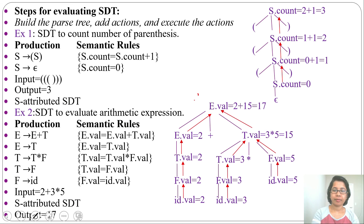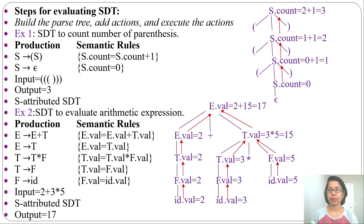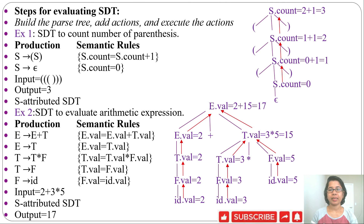We did a post-order traversal: left, then right, then root. To summarize how to evaluate SDT: first build the parse tree, then evaluate the SDT according to the type of attribute — it might be S-attribute or L-attribute, and evaluate accordingly. In the next lecture I will discuss more examples of SDT. If this lecture was helpful, please like and subscribe.